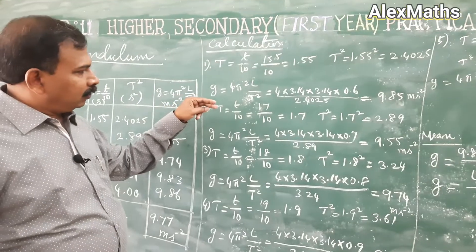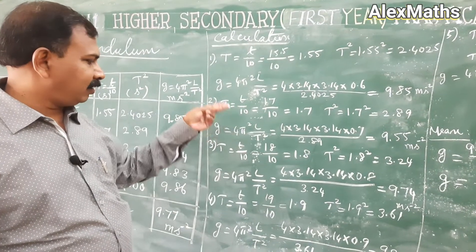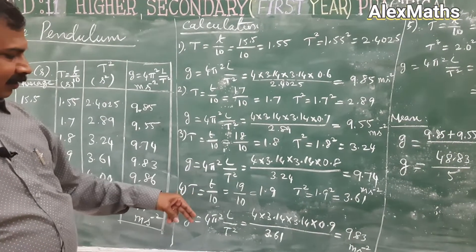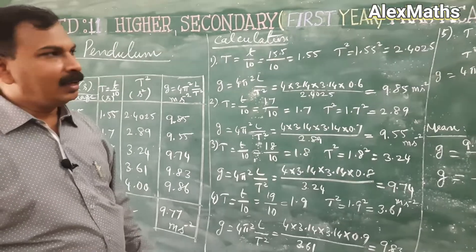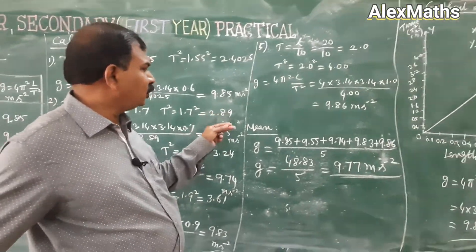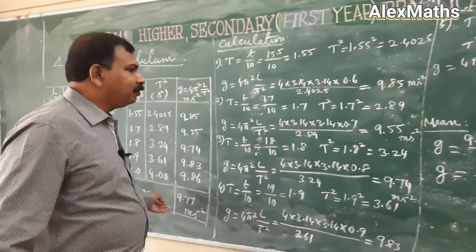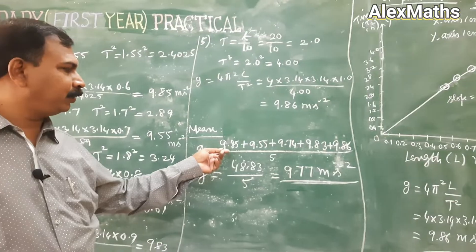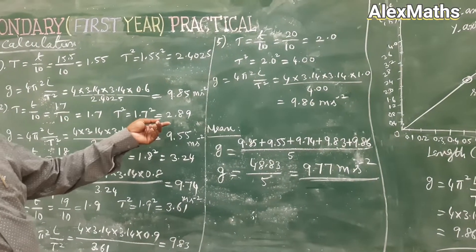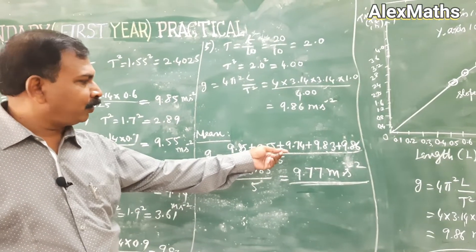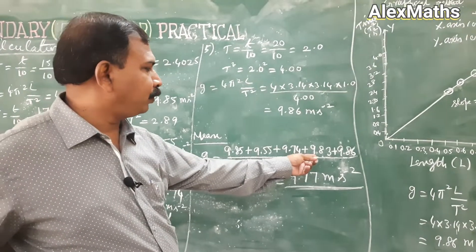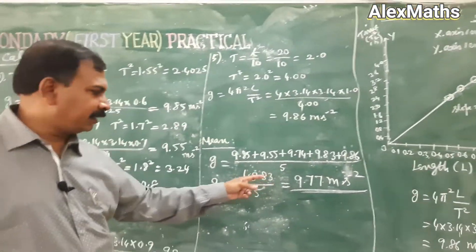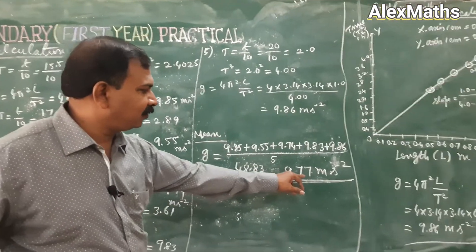Similarly, do the calculation for 0.7 m, 0.8 m, 0.9 m, and 1.0 m. Then find the average: adding 9.85, 9.55, 9.74, 9.83, and 9.86, divide by 5 — the mean value of g is 9.77 m/s².